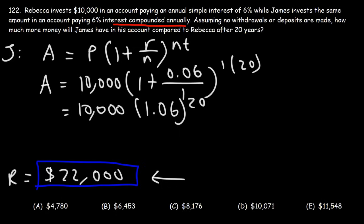So in the second year, the third year, and the fourth year, Rebecca is only receiving $600. But James in his second year is receiving 6% not only on the principal, but on the interest that he accumulated in the first year. Thus, we have the compounding effect. James is not only receiving interest on his principal like Rebecca is, but he's also receiving interest on the interest he accumulated in past years, and that's why he's going to have more in his account.